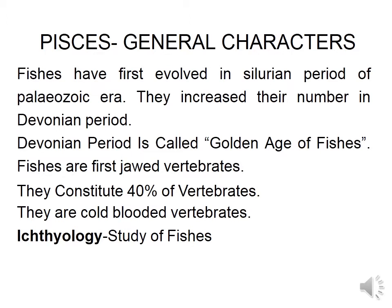Fishes are the first jawed vertebrates, or they are the lowest form of jawed vertebrates. They constitute 40% of the total vertebrate population. They are cold-blooded vertebrates and the study of fishes is known as ichthyology.